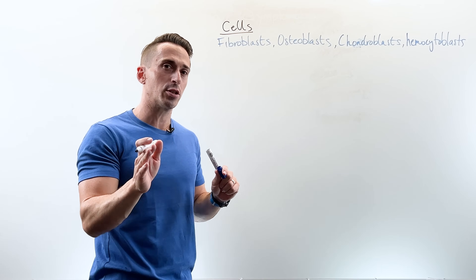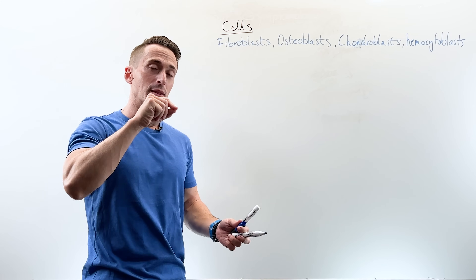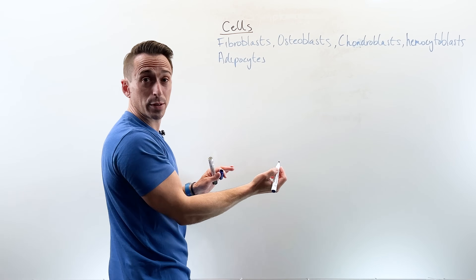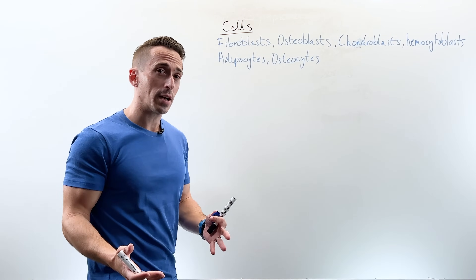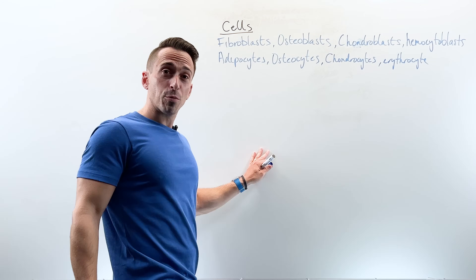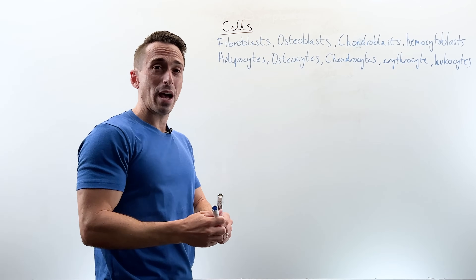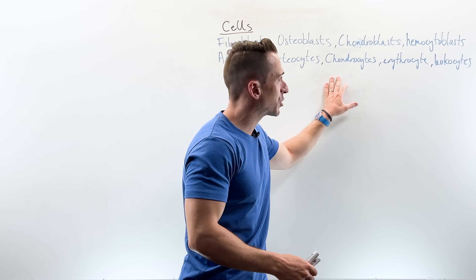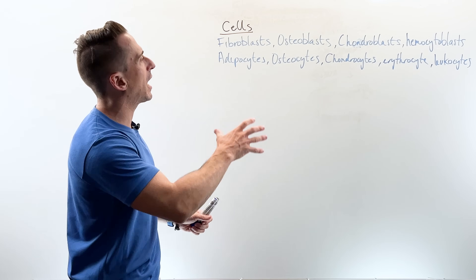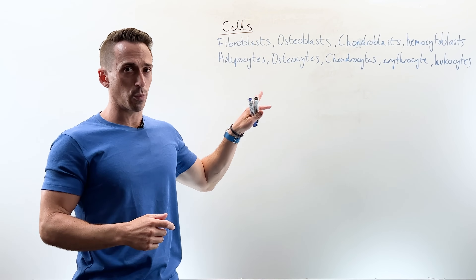The second type of cell you need to know are the cytes — the mature cells that you see when you look at the tissue under a microscope. These include adipocytes (fat cells), osteocytes (bone cells), chondrocytes (cartilage cells), erythrocytes (red blood cells), and leukocytes (white blood cells). Again, not an exhaustive list, but these are the most common and most important. These cells produce the next two components of connective tissue.